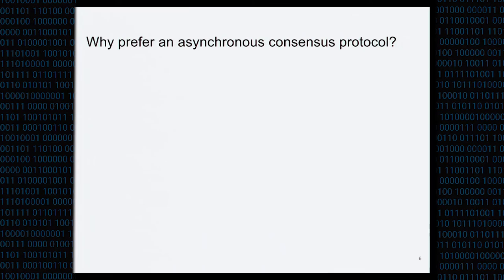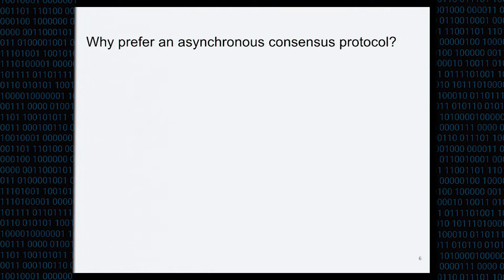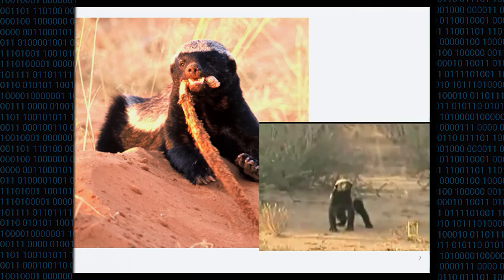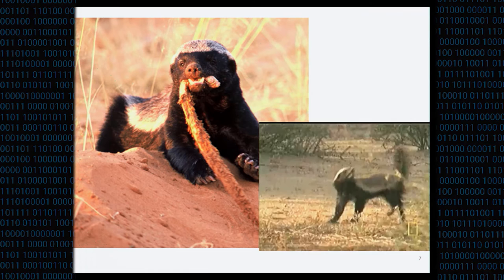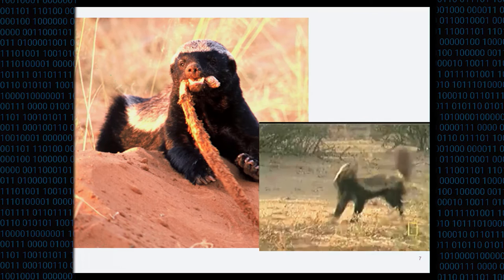Before getting into the protocol details, I want to advocate in favor of asynchronous protocols in general. The excitement about consensus protocols is largely due to Bitcoin's success, and Bitcoin changes how we think about what it takes to make a practical consensus protocol. Bitcoin isn't particularly fast or high-throughput, but it succeeded because it shows resilience under fairly challenging conditions. This is why Bitcoin enthusiasts have called it the honey badger of money — it appears unstoppable even by highly motivated attackers. Honey badgers bite the heads off cobras, are immune to their venom, and can't be stopped.